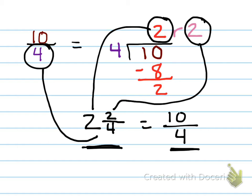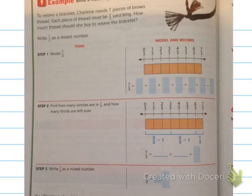Okay, let's look at one more strategy using a number line. Let's read this. To weave a bracelet, Charlene needs 7 pieces of brown thread. Each piece of thread must be 1 third yard long. How much thread should she buy to weave the bracelet? So basically, we're writing 7 thirds as a mixed number. What they have us doing on the right, where it says model and record, is using unit fractions to show 7 thirds.